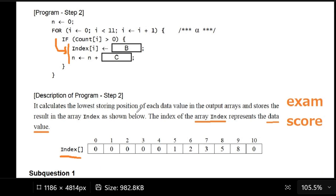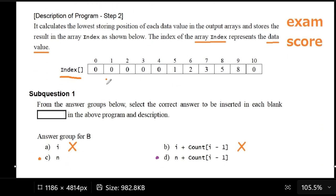The index array we are interested in calculates the lowest storing position of each data value in the output arrays and stores the result in the array index as shown below. What that means is if you got the index array like this, what we need to do is store the values based on the data value which pertains to the exam score.